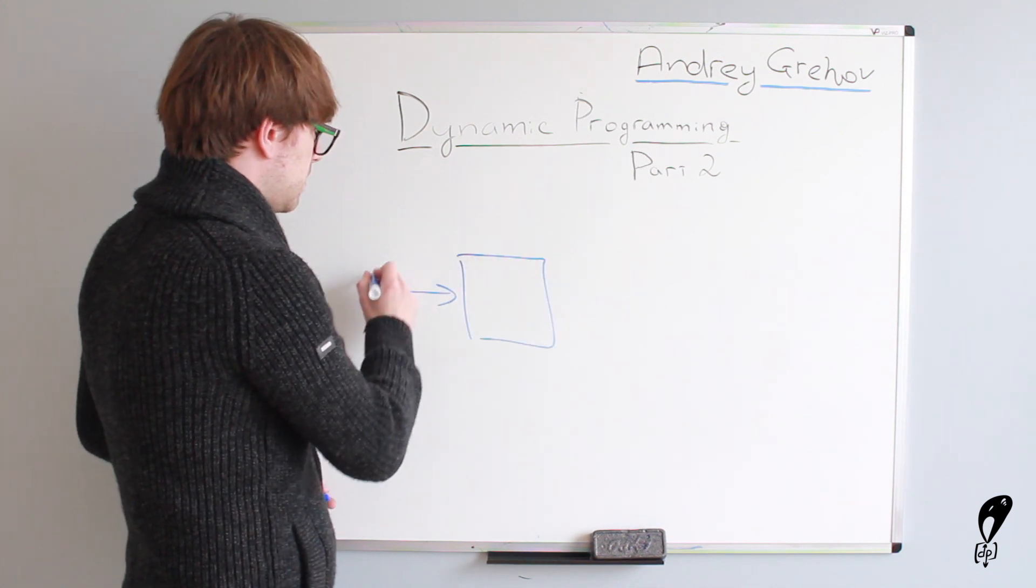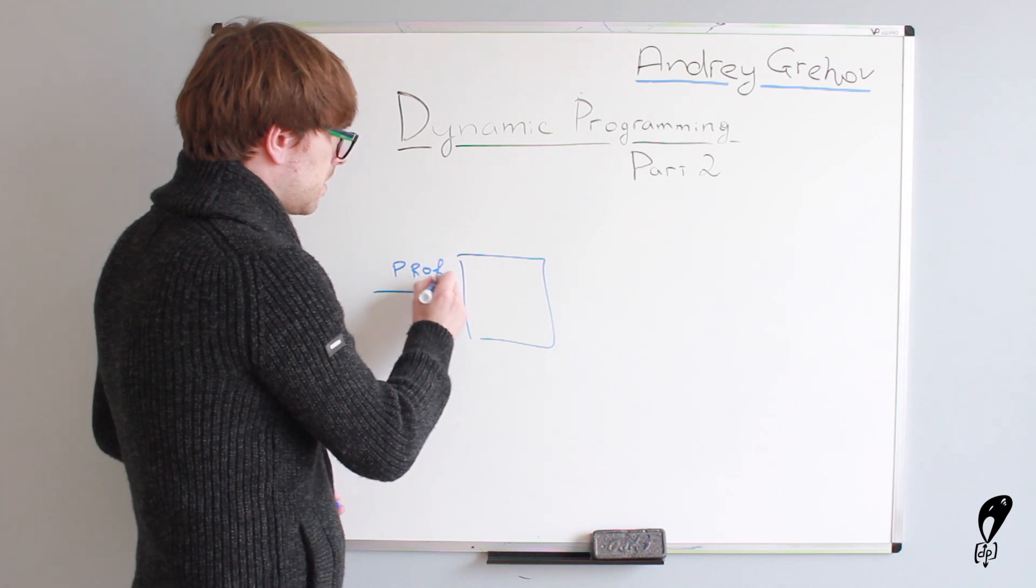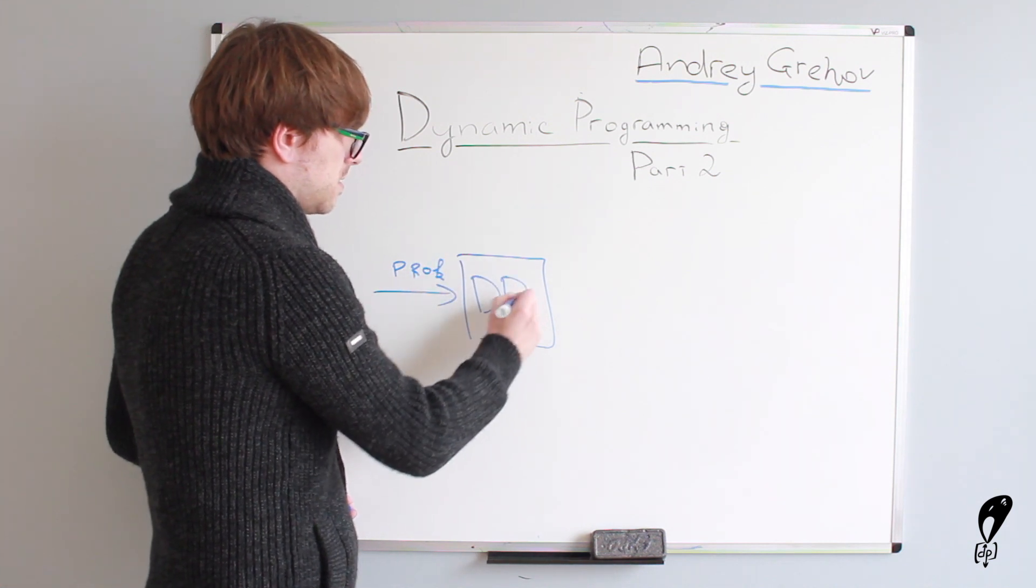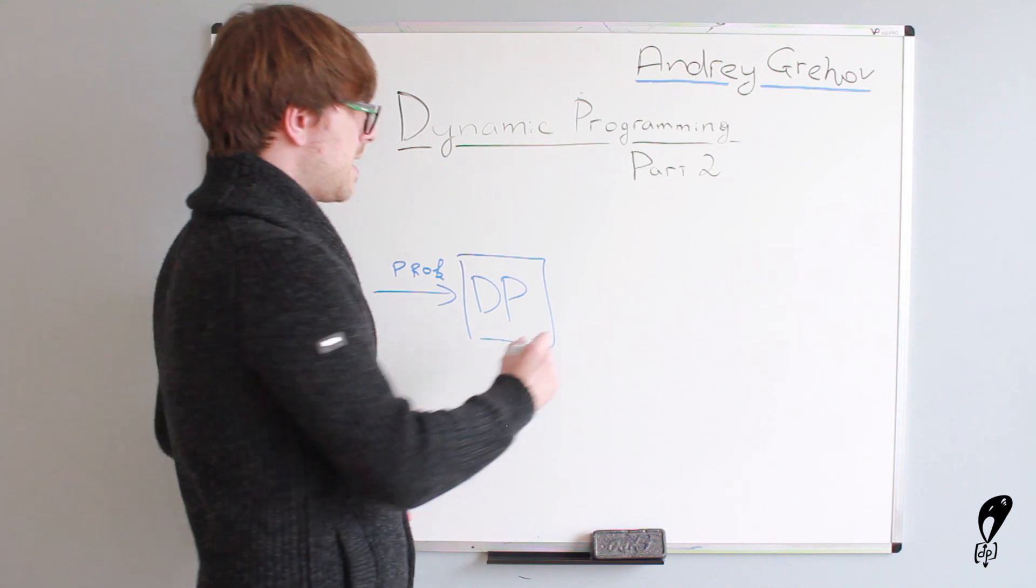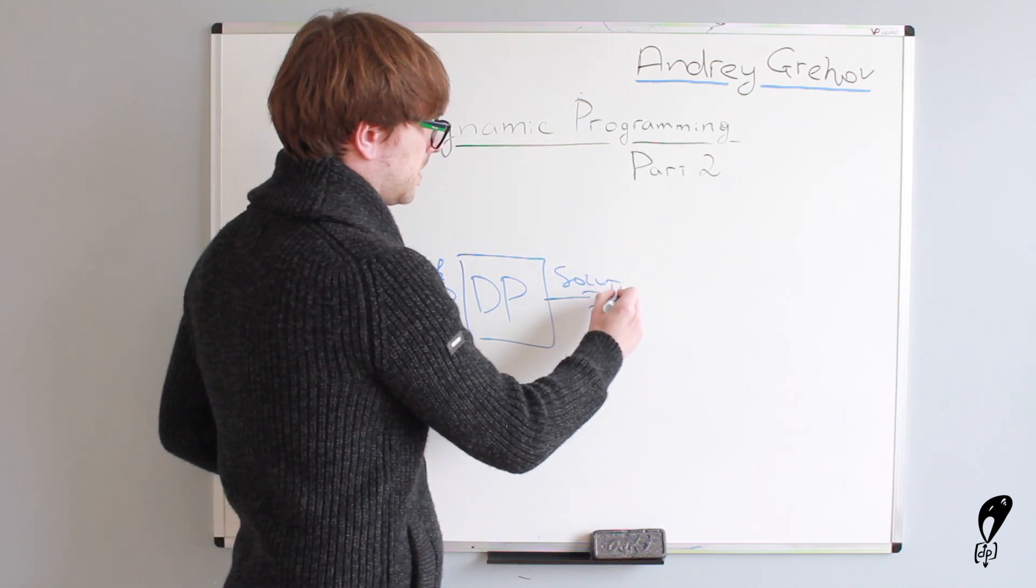As a problem statement, this is our problem, right, and this is the Dynamic Programming black box, and then we have a solution as an output.